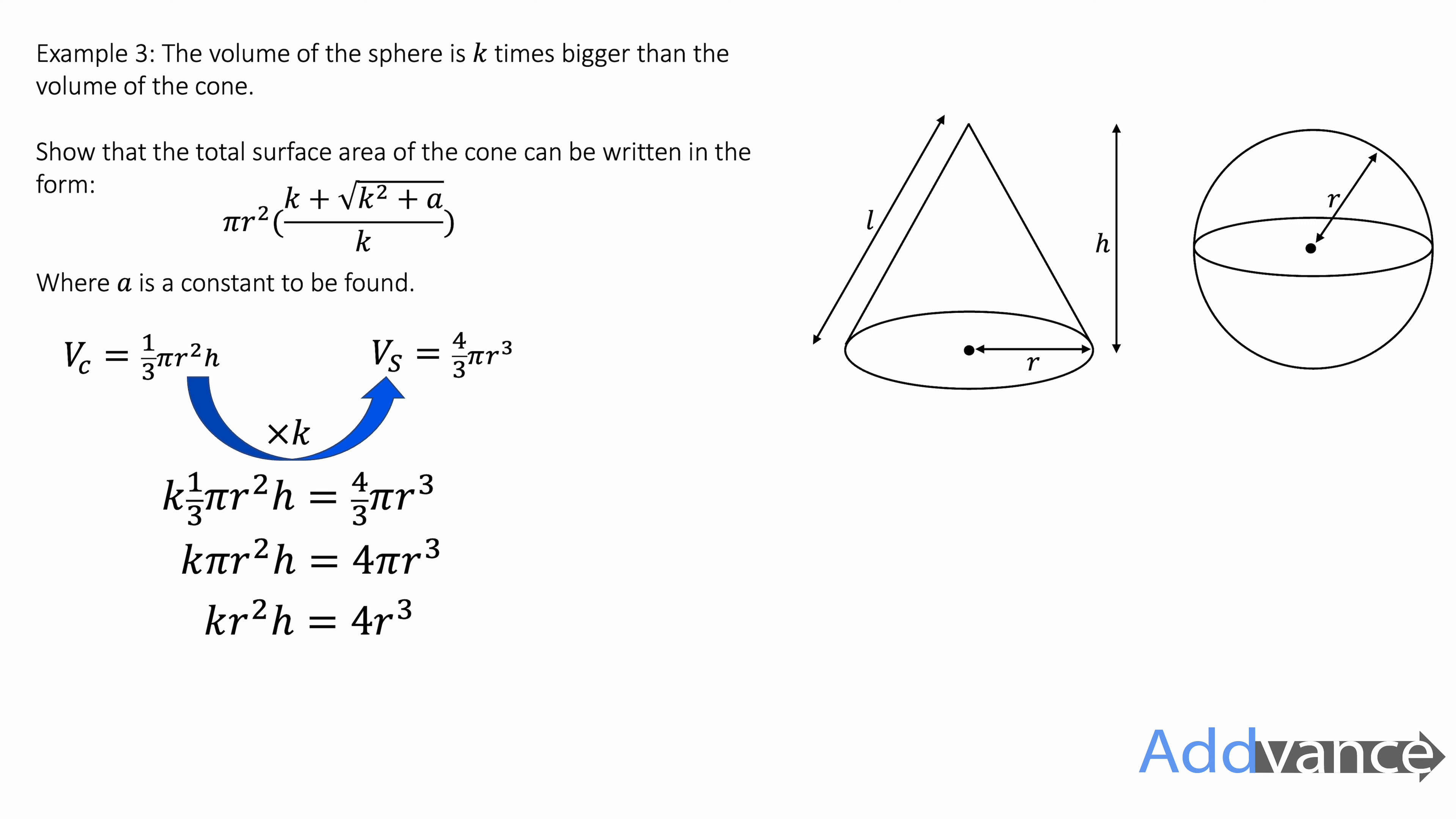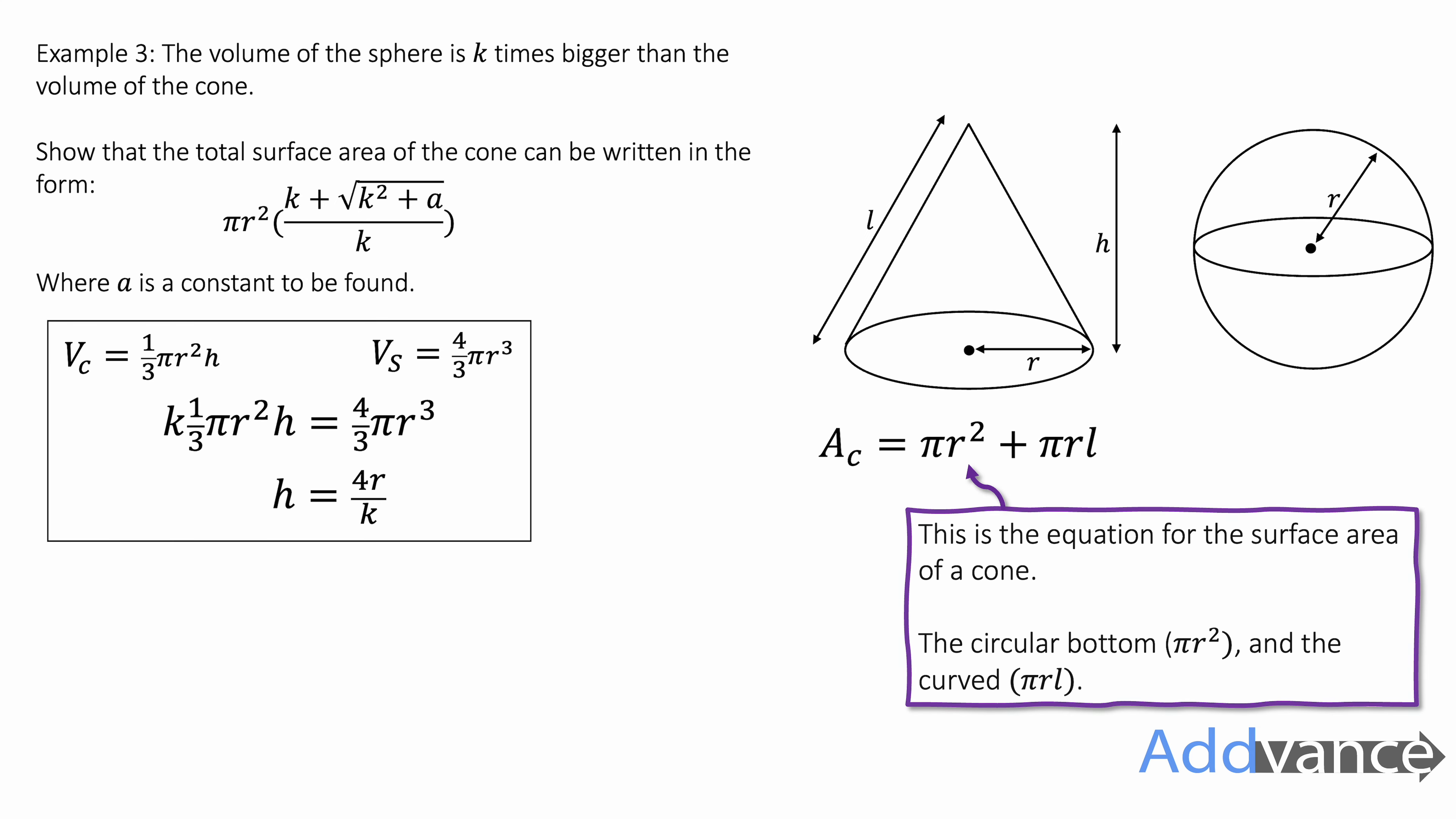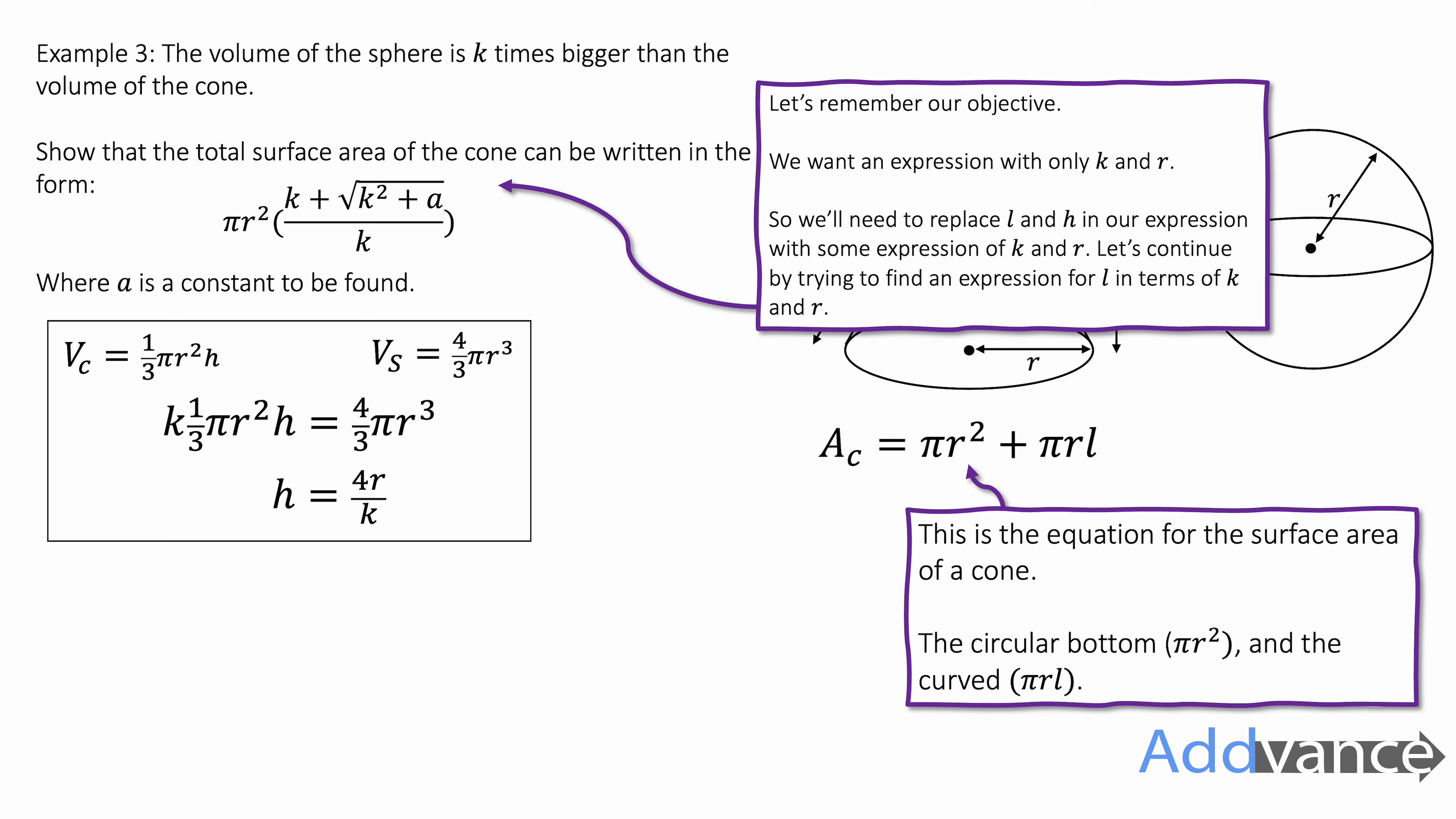We've now got an r squared on both sides. We divide both sides by r squared. The r cubed divided by r squared is just r. So kh equals 4r. And we'll divide by k to get h is equal to 4r over k. And this is useful because look at the final equation we want, that expression we want from the equation. And we don't want any h's, we want r's and k's. And so it's nice to have h replaced by r's and k's. Now let's look at the surface area of the cone. The surface area of the cone is given by the area of a circle and the curved surface area of a cone.